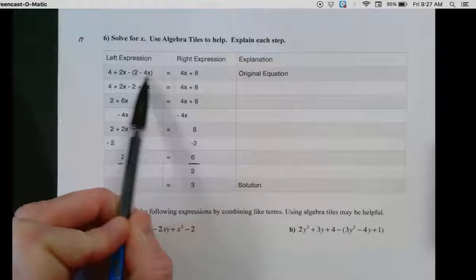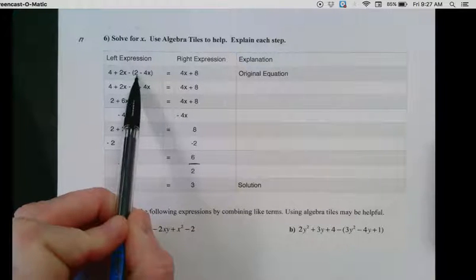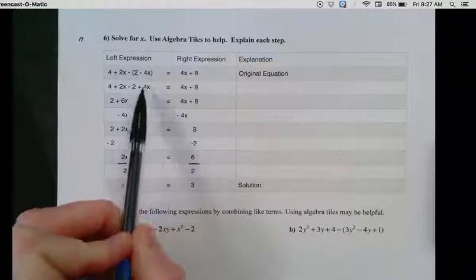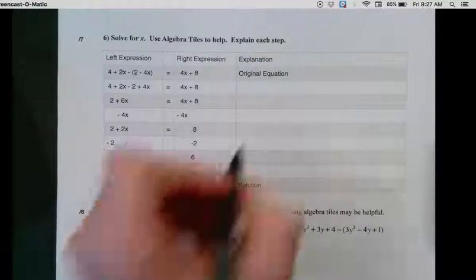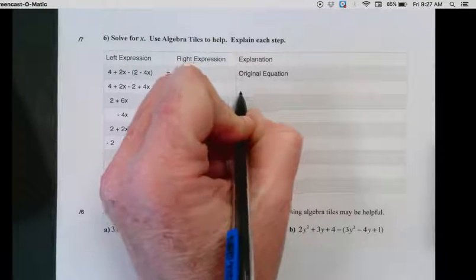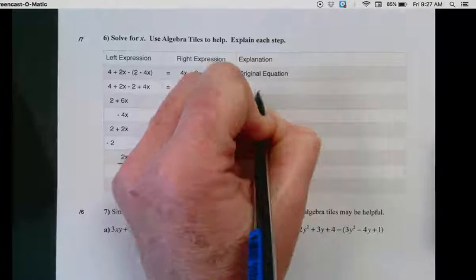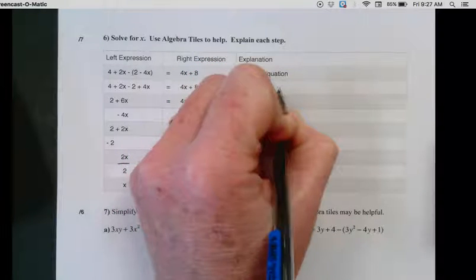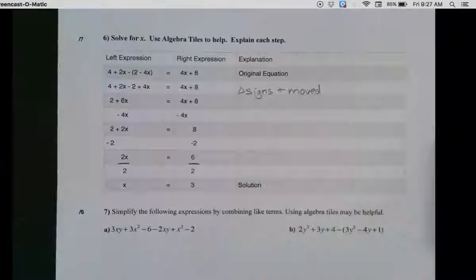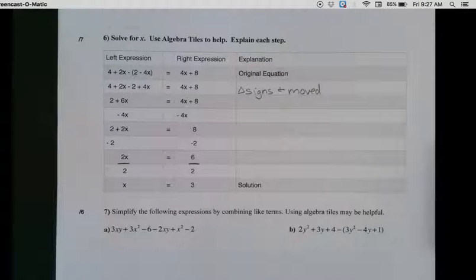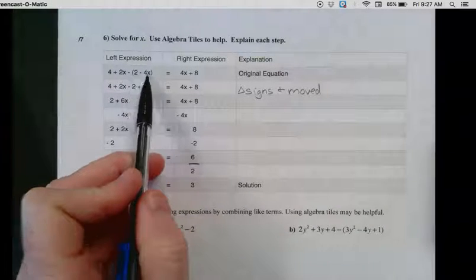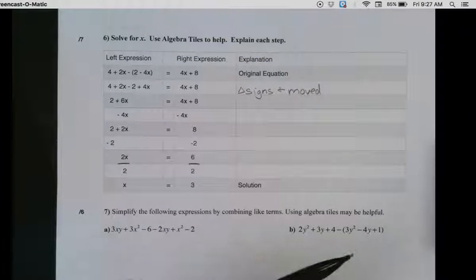These signs have all changed. That 2 became a negative 2, that negative 4x became a positive 4x. So what happened? We changed the signs and moved, if you're thinking about your algebra tile mat. They were down in the negative or opposite region, and we flipped, which changed the signs, and we moved to the positive region.